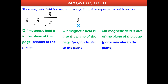If the magnetic field is out of the plane of the page, you model it like an arrow approaching you. When an arrow comes toward you, you see the tip of the arrow, which appears as a dot. Therefore, if a magnetic field or any physical quantity is out of the plane of the page, we show it as a dot (•).